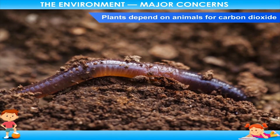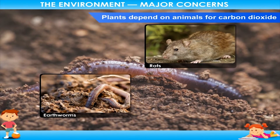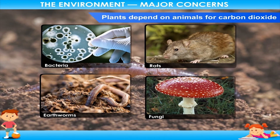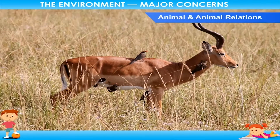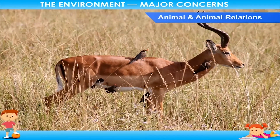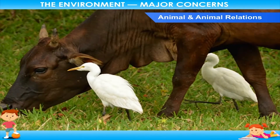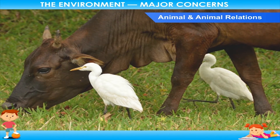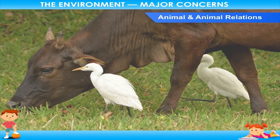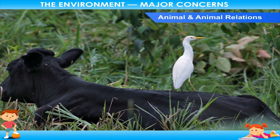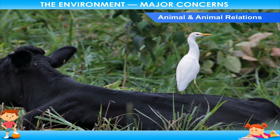Animals make soil fertile. Earthworms and rats help make the soil fertile, and some bacteria and fungi also help in the decaying of dead plants and animals. Animal and animal relations: Animals also depend on other animals for their benefit. For example, the relationship between cattle and egrets — an egret rides on the cattle and feeds on the insects, while the cattle benefits by getting rid of irritating insects.